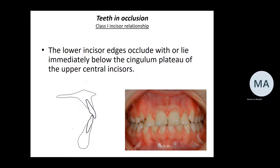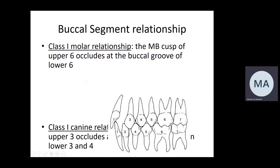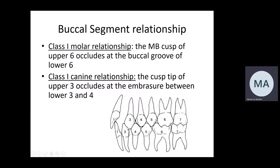Class 1 incisor relationship is when the lower incisal edge occludes at or immediately below the cingulum plateau of the upper central incisors, according to the British Standards Institute 1983. The buccal segment relationship is classified as class 1 when the mesiobuccal cusp of the upper first molar occludes at the buccal groove of the lower first molar. Canine relationship is class 1 when the cusp tip of the upper canine occludes within the embrasure between the lower canine and first premolar.